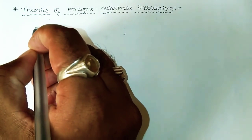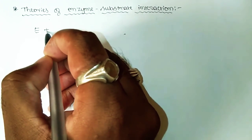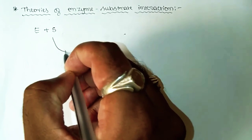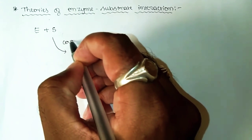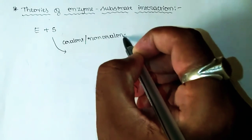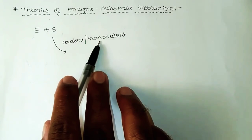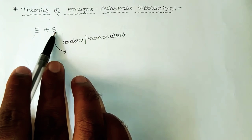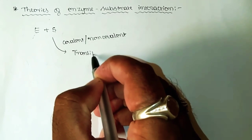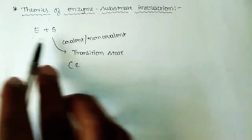According to the mechanism of enzyme-substrate interaction, when an enzyme is added to your reaction mixture — that is, your biochemical reaction system — it interacts with the substrate molecule. The interaction will occur either through covalent interactions or non-covalent interactions, and the enzyme will get combined with the substrate molecule.